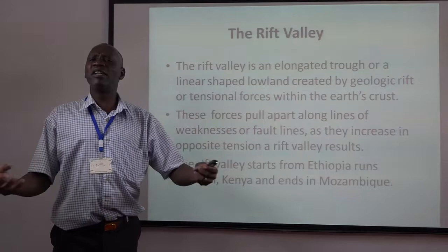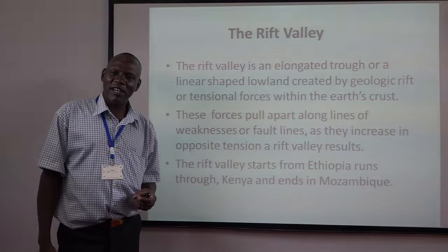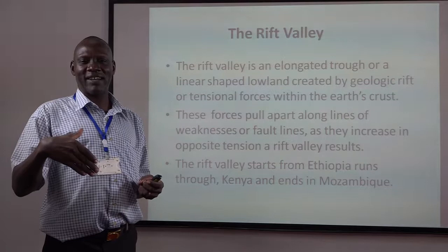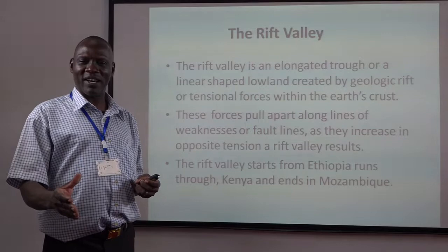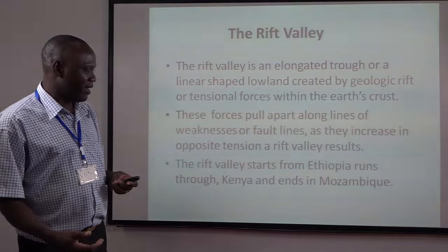The rift valley of East Africa starts from Ethiopia, and from Ethiopia it runs and enters Kenya from Lake Rudolph. It crosses Kenya into the Kenyan-Tanzanian border and slopes down to Lake Malawi, then ends at Lake Mozambique. But when we reach Lake Malawi, this rift valley divides into two — that is why we have the eastern arm and the western arm.